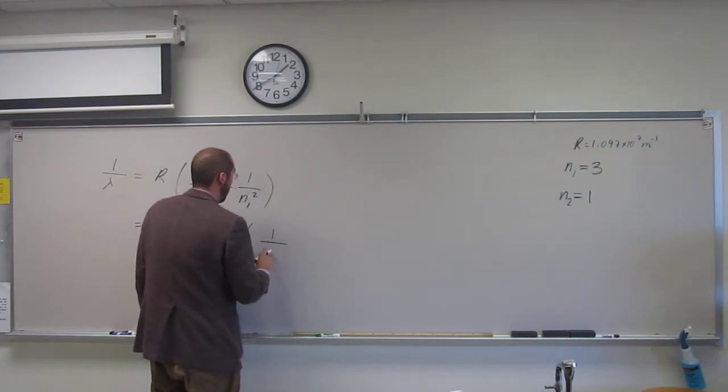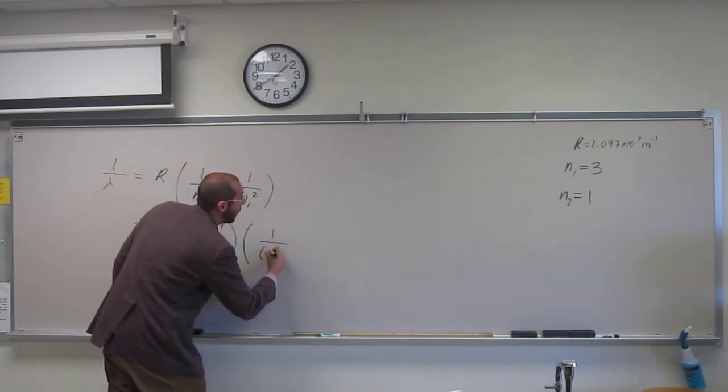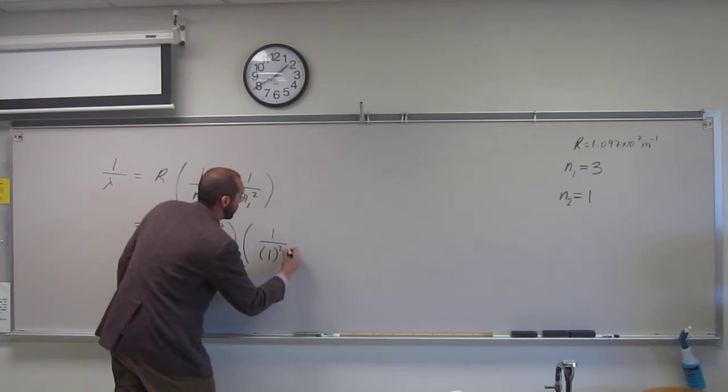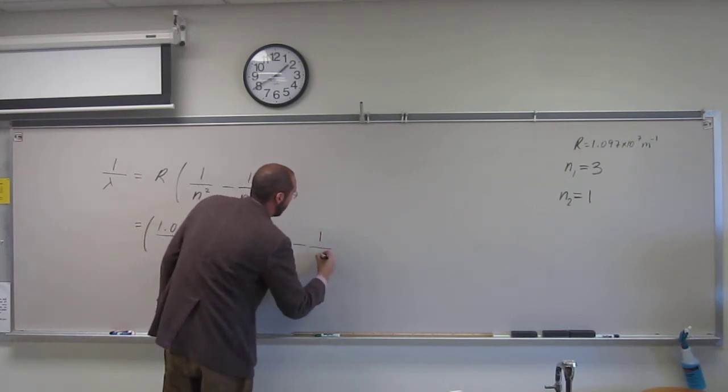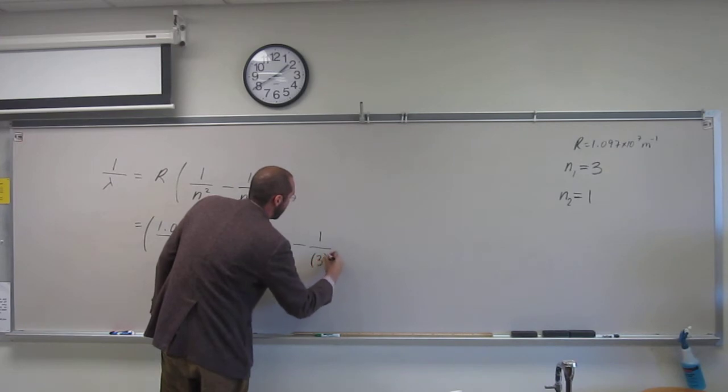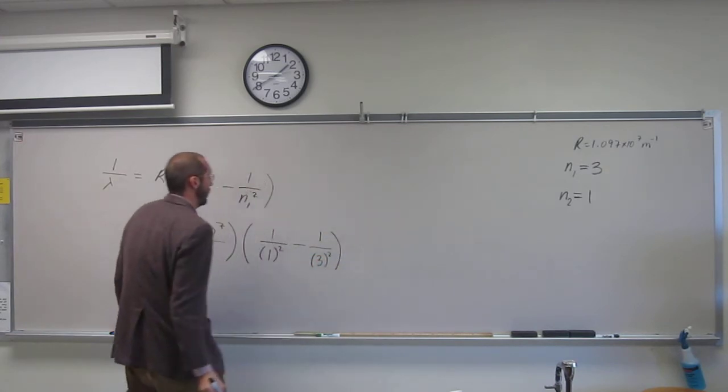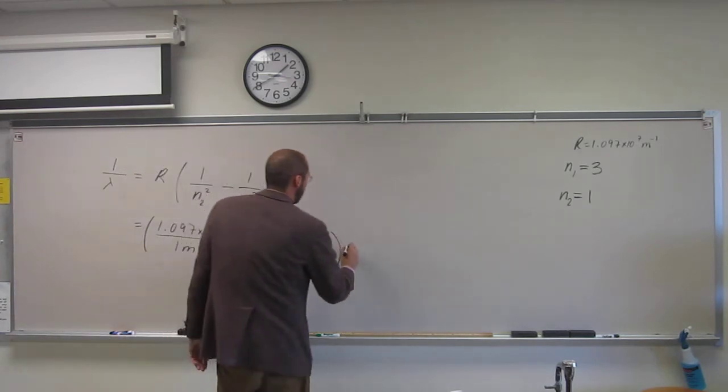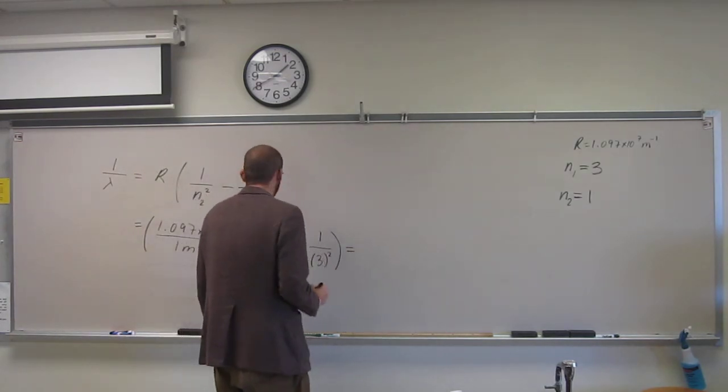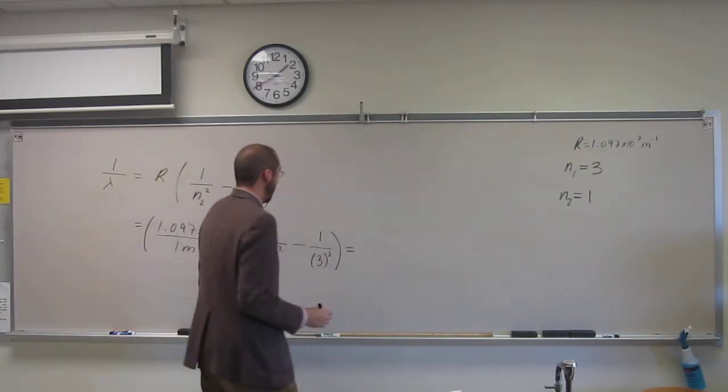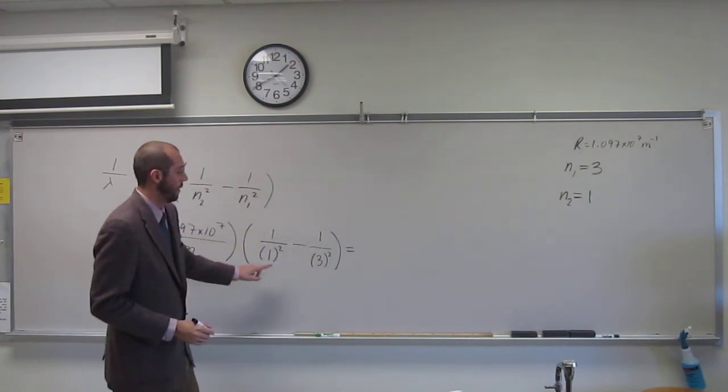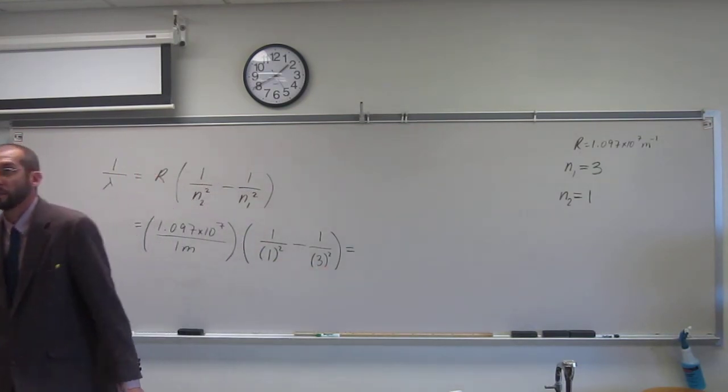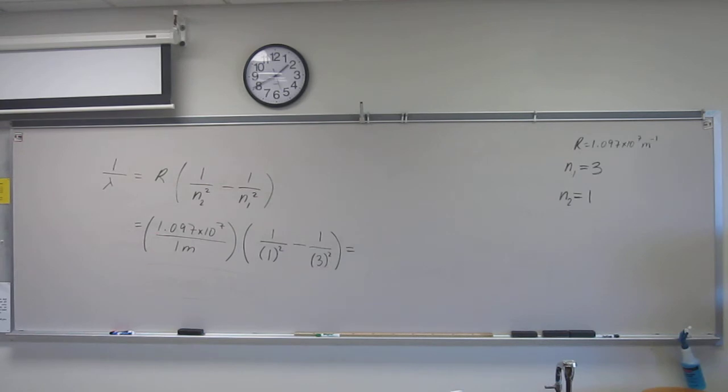So 1 divided by 1 squared minus 1 divided by n2 squared. Okay, so this is 1 minus 1 ninth, right? So I'm going to get the calculator.